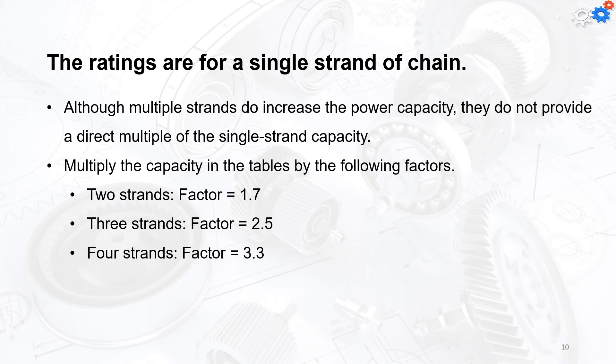Multiply the capacity in the tables by the following strand factors: for two strands, the factor is 1.7; for three strands, the factor is 2.5; and for four strands, the factor is 3.3.